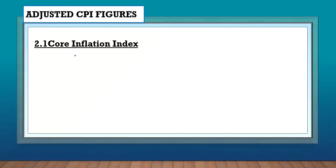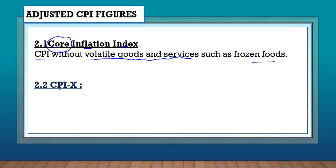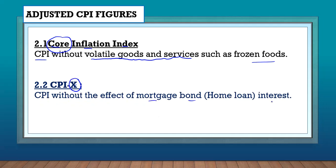The CPI can also be adjusted to a core inflation index. Core means real. To get core inflation, you need to remove volatile goods and services — those are goods and services whose prices change all the time and are not stable, such as frozen foods. There is also CPIX, where the X means we remove the mortgage bond or home loan interest, because this is also volatile.